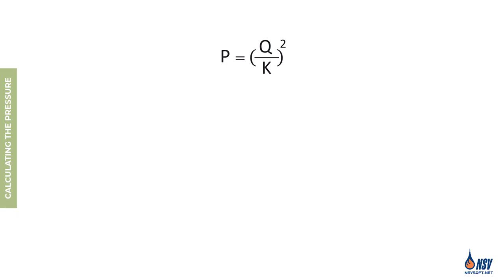In the initial step of hydraulic calculations using standard spray sprinklers, the flow rate of the most remote sprinkler is determined by multiplying the required density by the sprinkler's coverage area. By knowing the flow rate, we can calculate the required pressure by dividing the flow rate by the K factor and squaring the result.